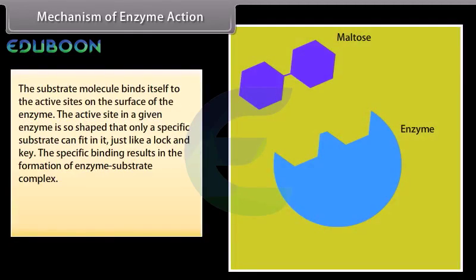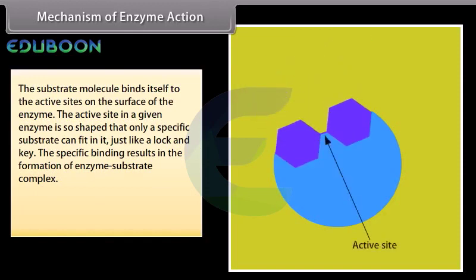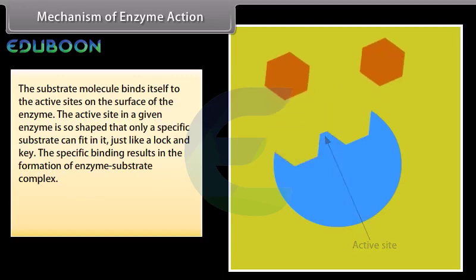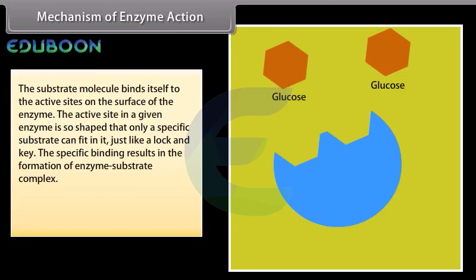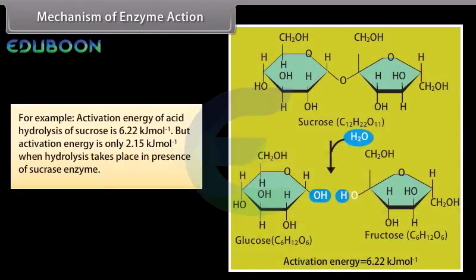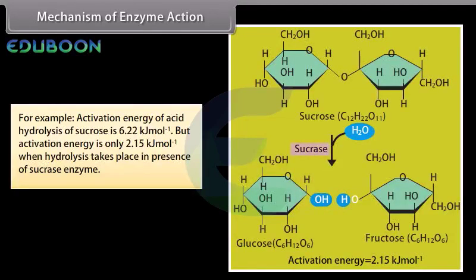Mechanism of enzyme action: the substrate molecule binds itself to the active sites on the surface of the enzyme. The active site in a given enzyme is so shaped that only a specific substrate can fit in it, just like a lock and key. The specific binding results in the formation of an enzyme-substrate complex. Enzymes lower down the activation energy of the reaction. For example, the activation energy of acid hydrolysis of sucrose is 6.22 kJ per mole, but only 2.15 kJ per mole when hydrolysis takes place in the presence of sucrase enzyme.